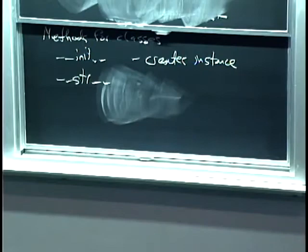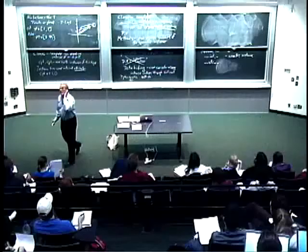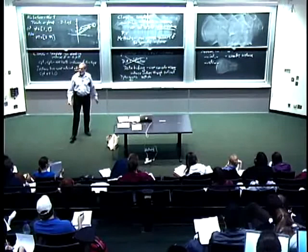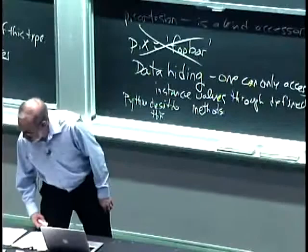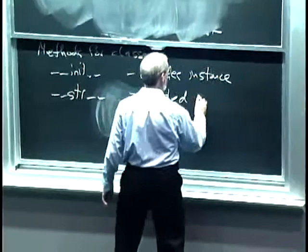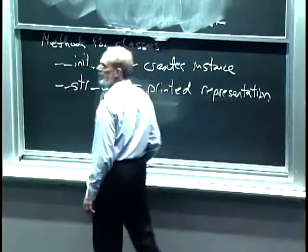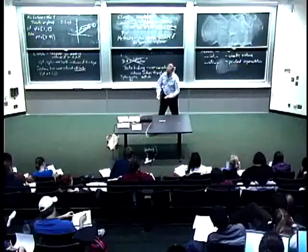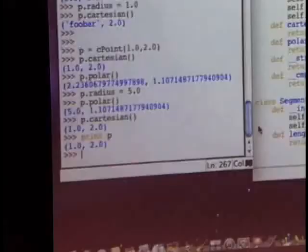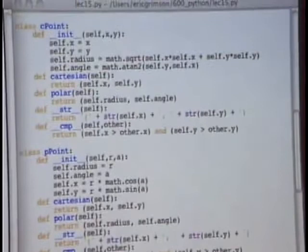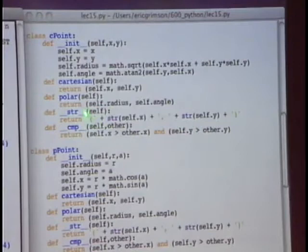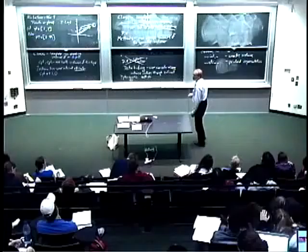What does __str__ do? Think about what str does in general — it converts things into a string type, and that's how we typically print things. So __str__ tells us how we want the object printed out. In the CartesianPoint class, __str__ takes self and returns a string combining an open paren, the x value, a comma, the y value, and a close paren — giving a nice printed representation.